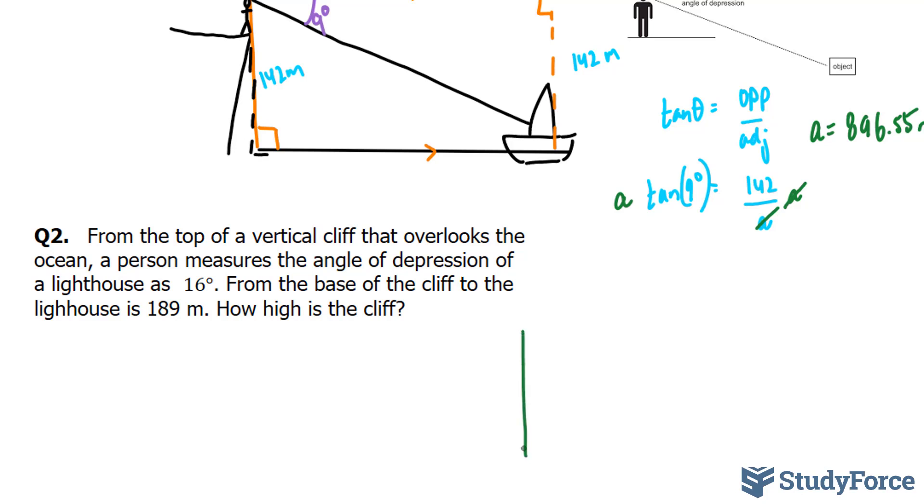So this time we have another cliff and the person is at the edge once again. And there is a lighthouse. And we are told that the angle of depression, so he is looking down to the base of the cliff. So his eyes are oriented to the base of the cliff at an angle of depression of 16 degrees. So once again, that will be representing our 16 degrees. And that right there is parallel to the ocean.